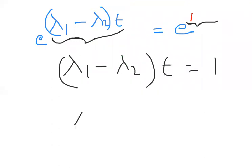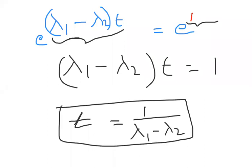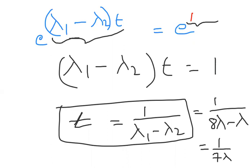Therefore t = 1/(λ₁ - λ₂). Substituting the given values λ₁ = 8λ and λ₂ = λ, the final answer is t = 1/(8λ - λ) = 1/(7λ). That is the answer to the 2017 NEET problem.